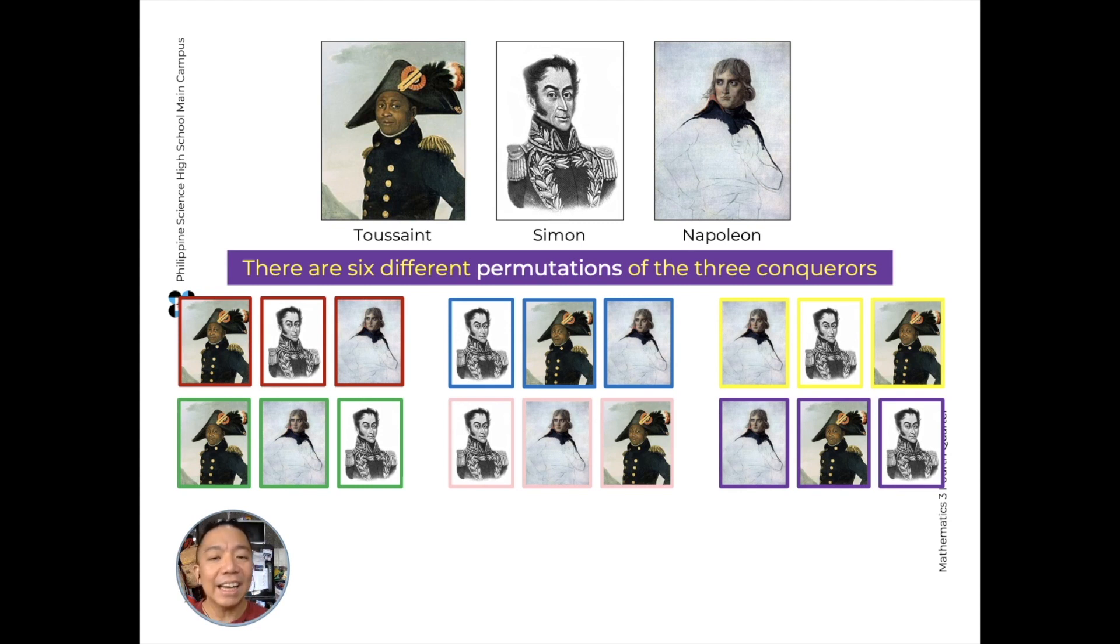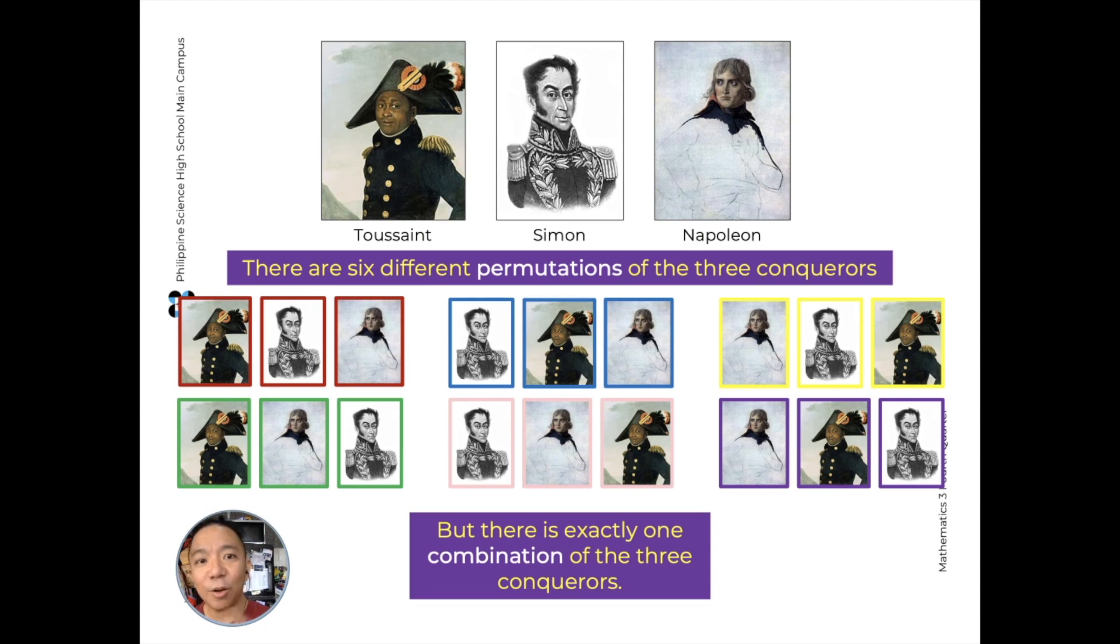So by arranging them with first, second, third, if we have three conquerors, we have six arrangements. But if the question or what we need is how many combinations or groupings we can make from these three conquerors, then we only have one combination.